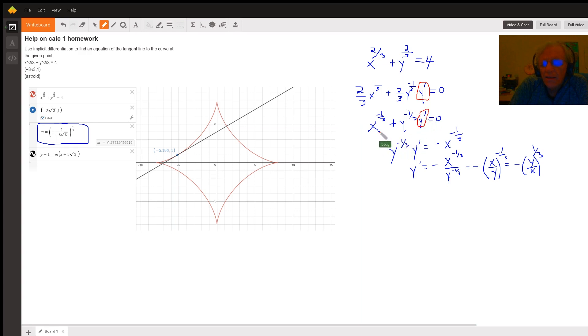So once I've done that, I subtract or move this x to the minus one-third to the other side of the equal sign by subtracting it. Then I divide both sides by y to the minus one-third. And then I realize that both the x and the y are raised to the same power, so I can write it this way.